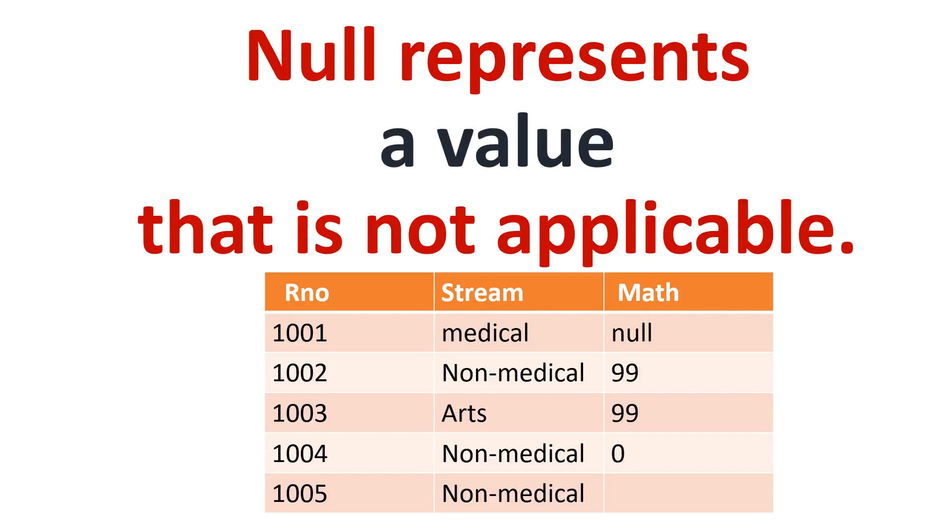Null represents a value that is not applicable. For example, in a table we have five records. In the first record, the record is of a medical student who has no mathematics subject. Under mathematics, it will have null value because null indicates it is not applicable. Math value is not applicable for a medical student.